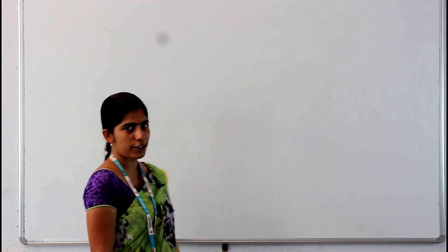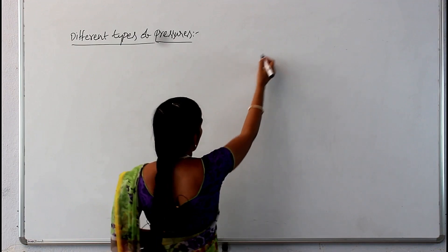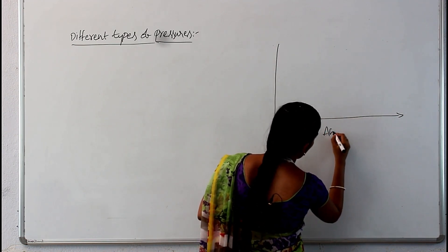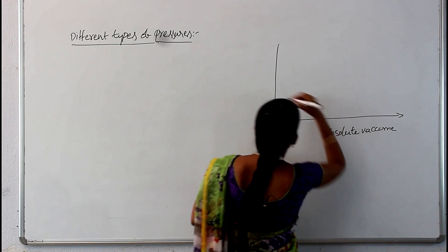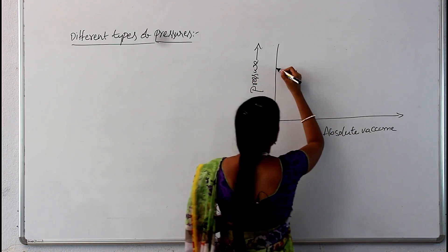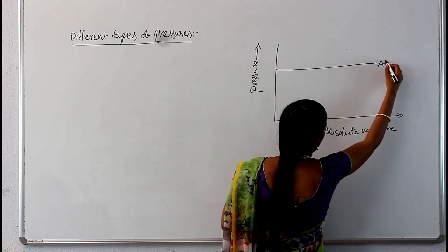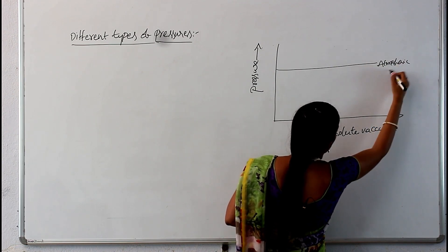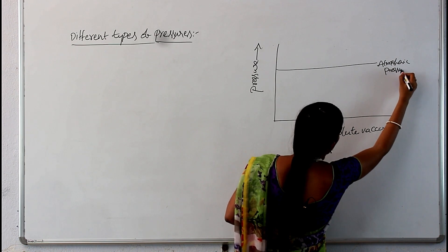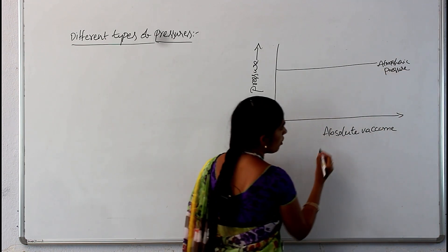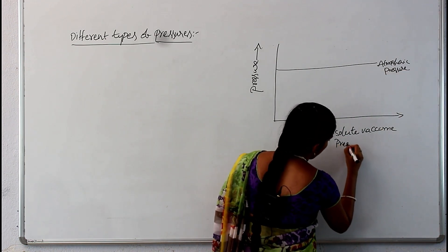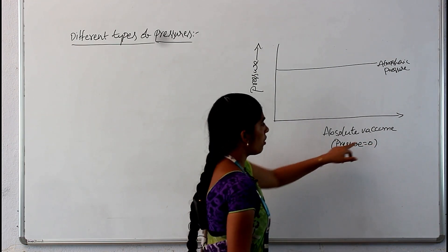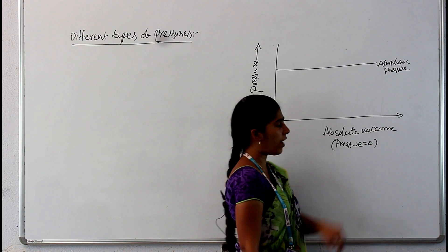Now let us discuss about the different types of pressures with a graph. I am plotting a graph between absolute vacuum and pressure. At some point atmospheric pressure will be there, and at absolute vacuum, pressure is zero. There is no pressure present at absolute vacuum because the name itself says it is a vacuum.